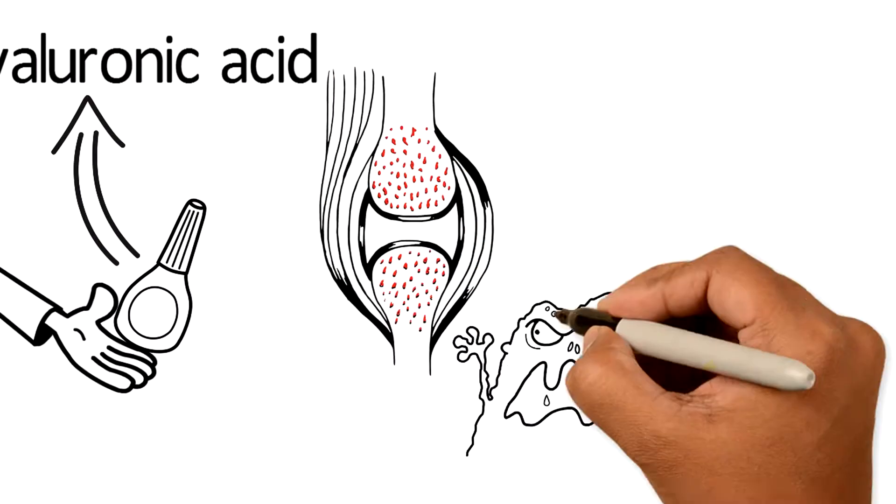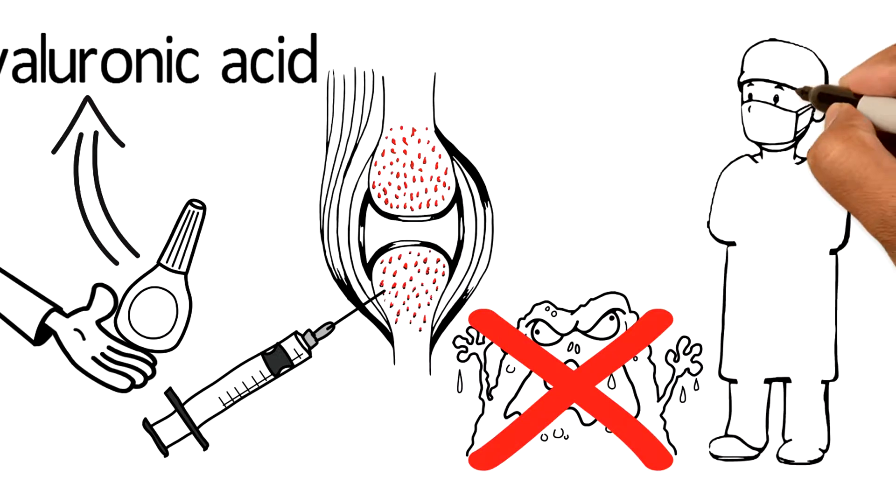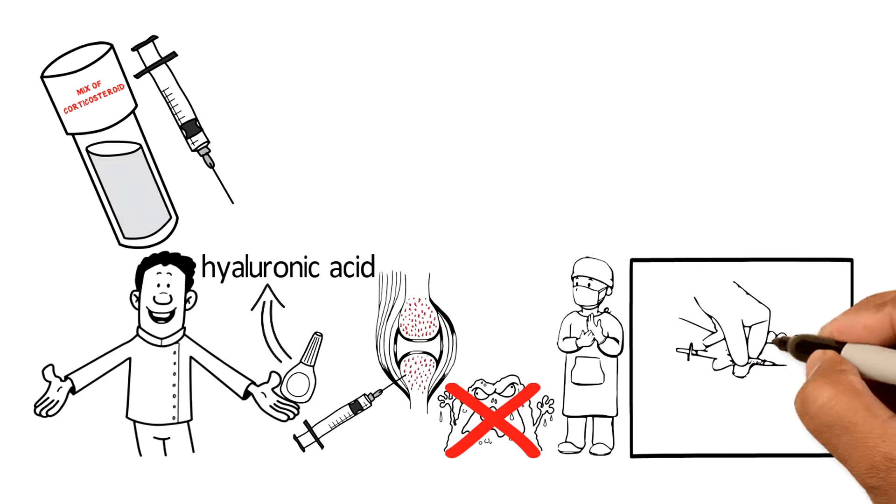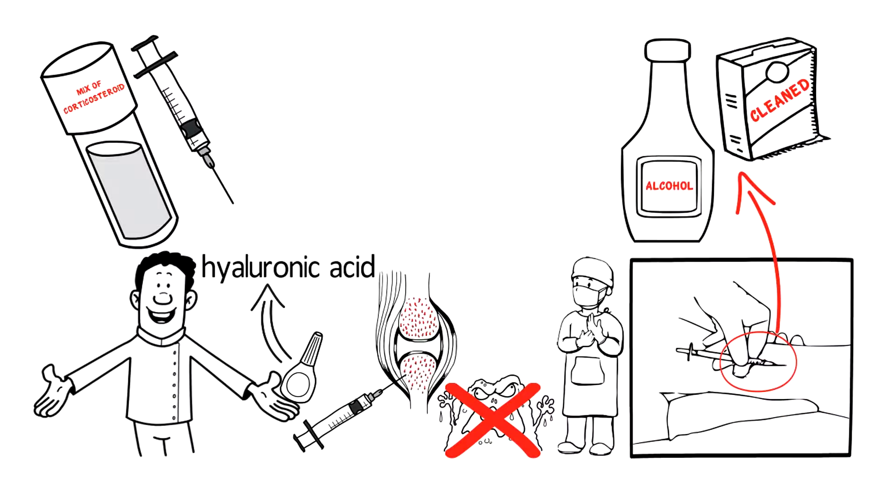To prevent infection, joint injections are performed under aseptic sterile conditions. The skin around the area to be injected is cleaned with alcohol-based swab. The physician performing the procedure will wear new, clean, and sterile gloves.